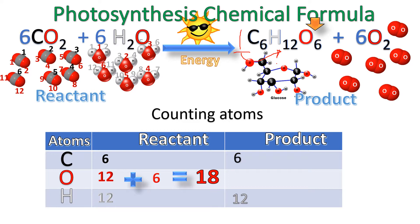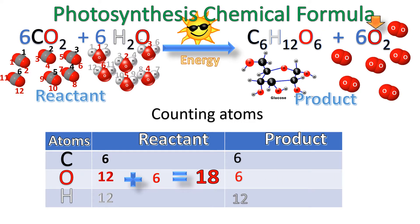Now we have the last one, which is oxygen. Oxygen has a subscript of six. And again, we're going to multiply by the one coefficient, because there's nothing in front, so we know it's a one. So one times six is six. Counting them: one through six. And we record the six in our table.